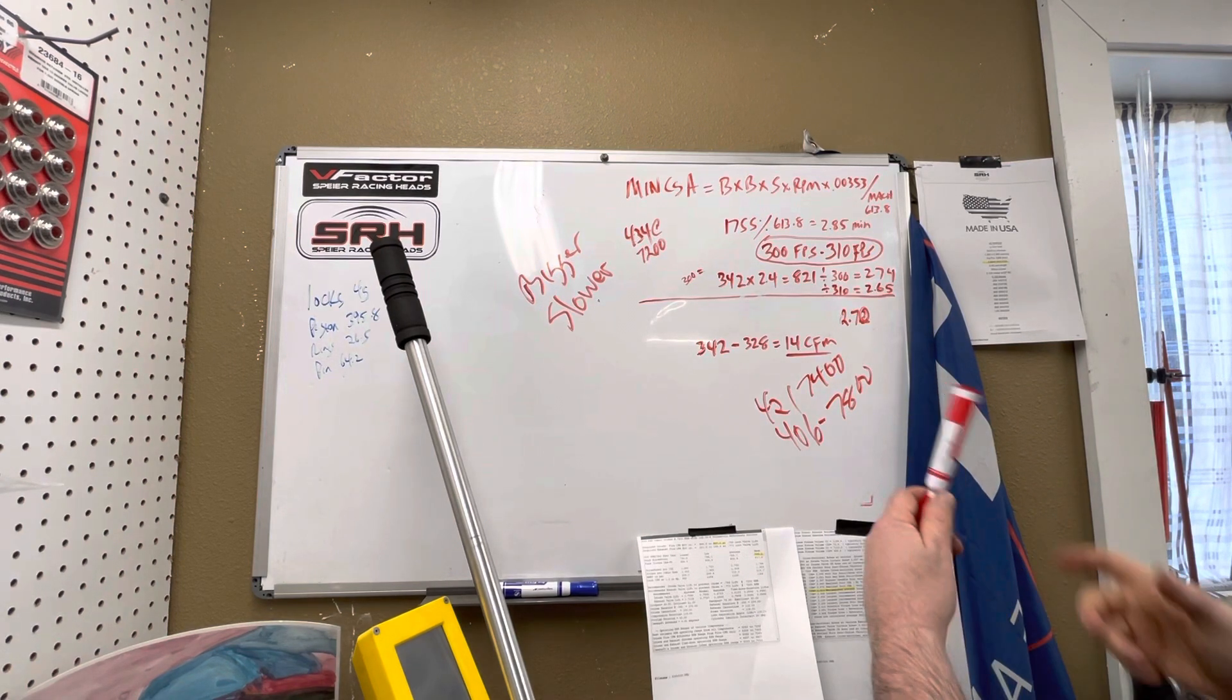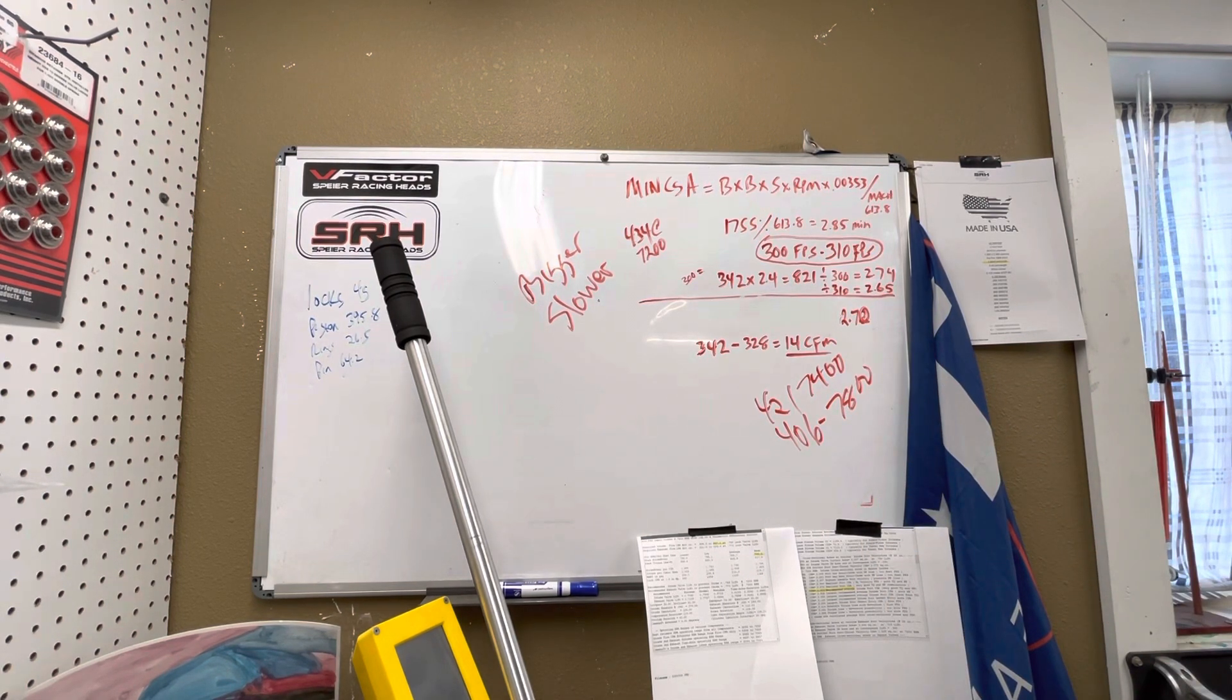There's a flow curve. So basically what I'm saying is the head is designed for exactly what Pipe Max calls for on average. That's why it makes good power on a 434.